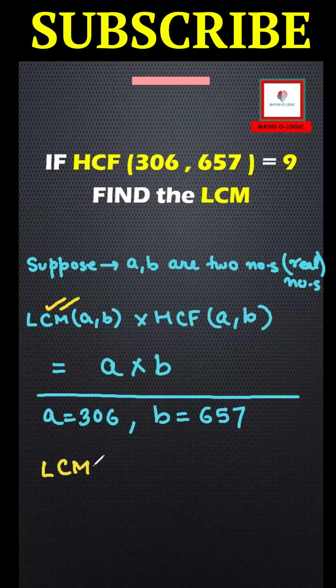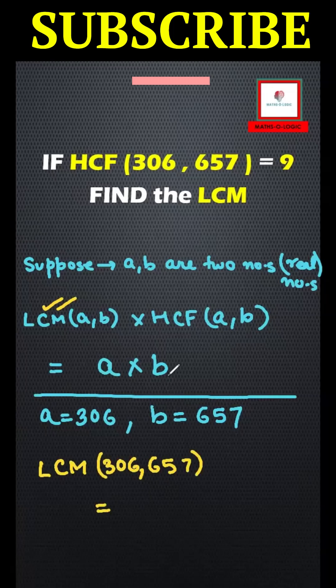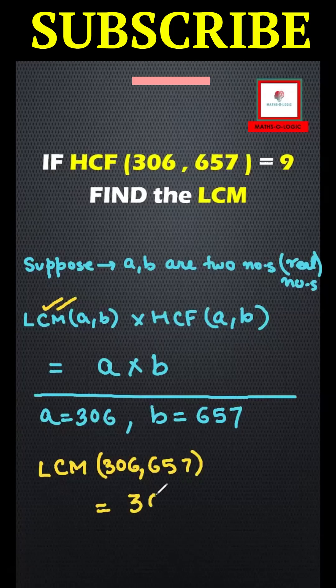LCM will be the product of these two numbers like 306 into 657 and HCF goes in the division.